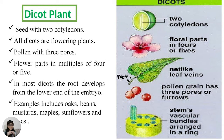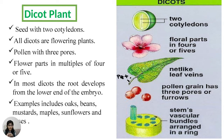Dicot plants: Dicot means seeds with two cotyledons. All dicots are flowering plants with pollen with three pores, and flower parts in multiples of four or five. In most dicots, the root develops from the lower end of the embryo. Examples include oaks, beans, mustard, maples, sunflowers, and roses.